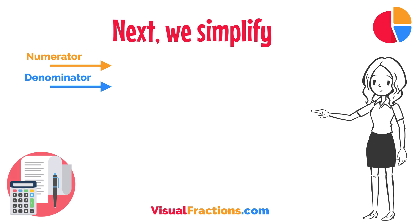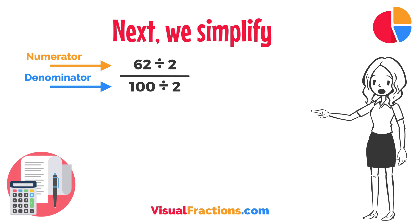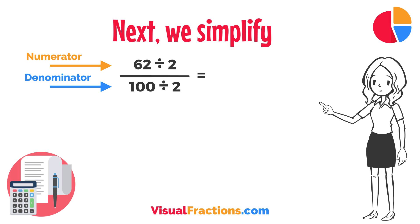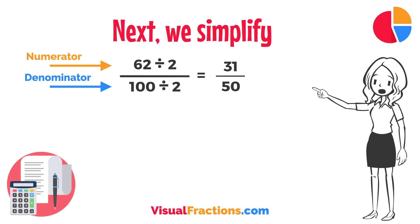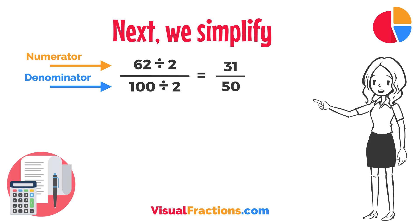Next, we simplify. Both the numerator and the denominator in 62 one-hundredths are divisible by 2, the greatest common divisor. Divide 62 by 2 to get 31, and divide 100 by 2 to get 50. So 62 one-hundredths simplifies neatly to 31 fiftieths.